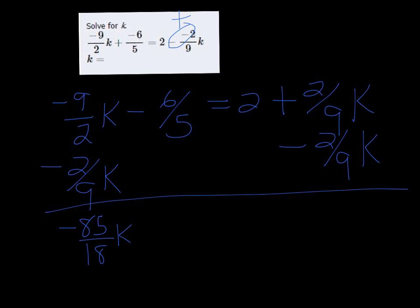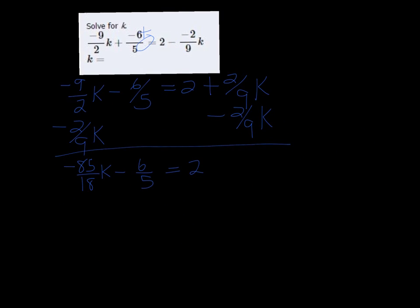Minus 6 fifths equals 2. We're going to add the 6 fifths over on both sides. 2 plus 6 fifths—I'll use my calculator. That is 16 fifths.